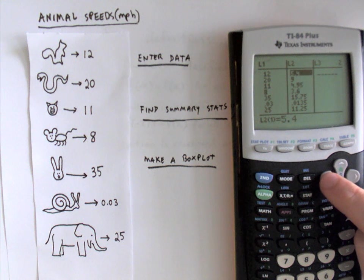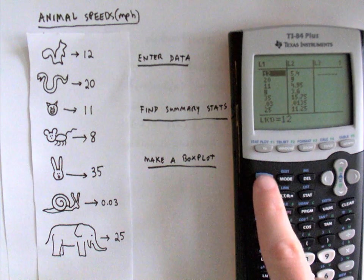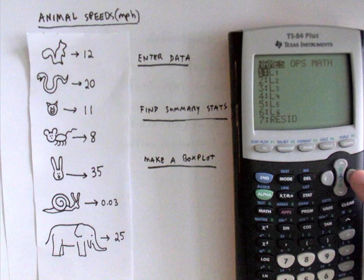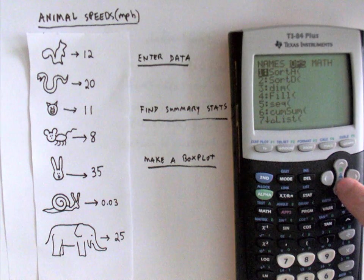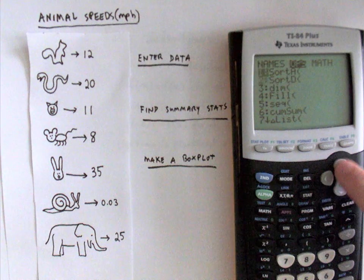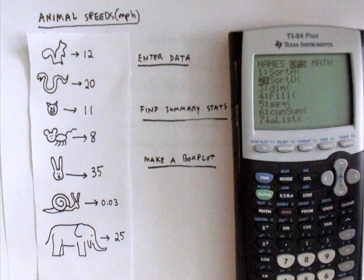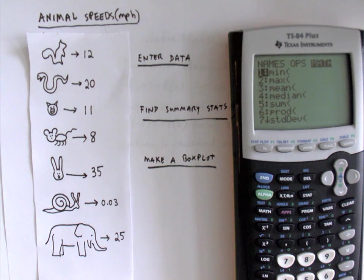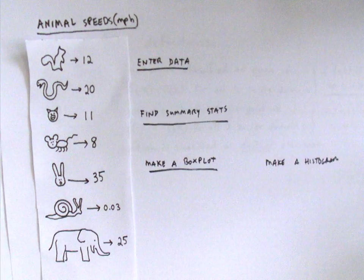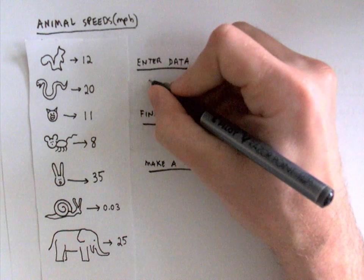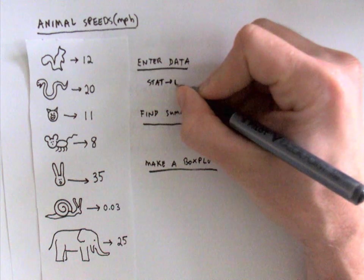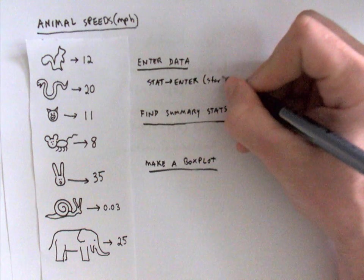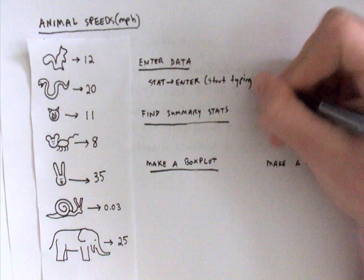One more thing about the list menu. Let me quit out of here by pressing second quit. If you look again at that list menu by pressing second stat there's also a column that says operations. And you can sort a list ascending or descending. It's pretty helpful if you're trying to find a particular element in the list and there's some other commands there as well. And then there's also a math menu where you can do a lot of individual statistics on that list. So to summarize, to enter data into your list all you have to do is press the stat key and then hit enter under where it says edit and then basically just start typing. That's all you have to do. Clear any lists that are there and start typing.